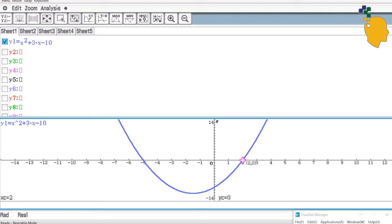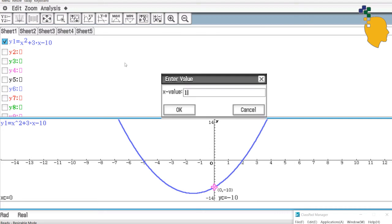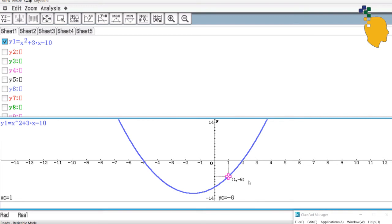And now let's try to find the y-value when x is 1. So all you have to do is go to analysis and trace, type 1, and the enter value will pop out again. Click OK and you'll move to the point where x is 1. So as you can see, 1, negative 6. So the y-value is negative 6.